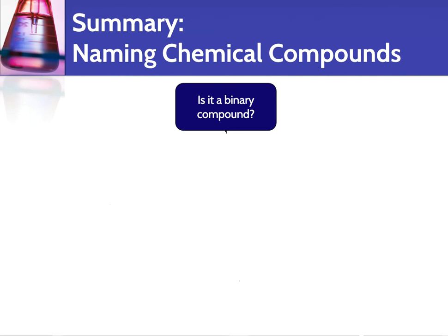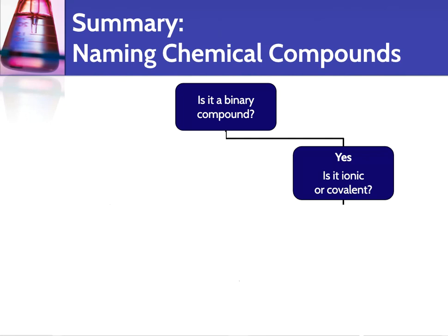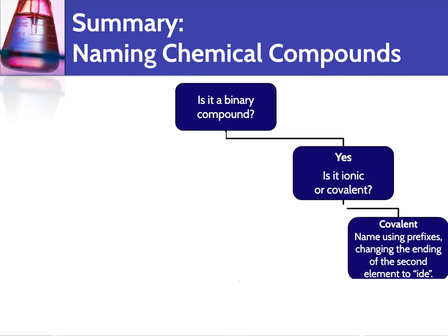The first question you ask is: is it a binary compound — does it have only two elements? If yes, you need to determine if it's ionic or covalent. Is it a metal and a non-metal, or is it two non-metals? If it's covalent, you name it using the prefixes and changing the ending of the second element to -ide.